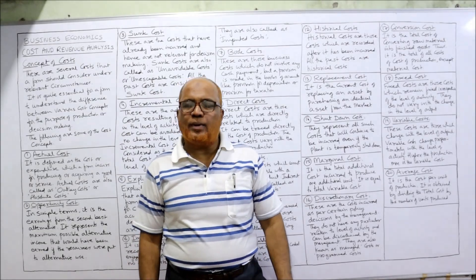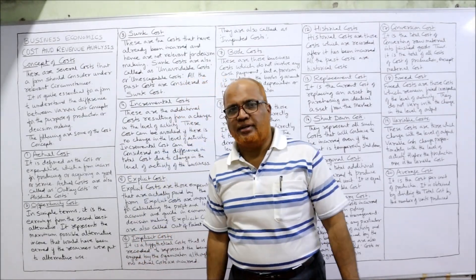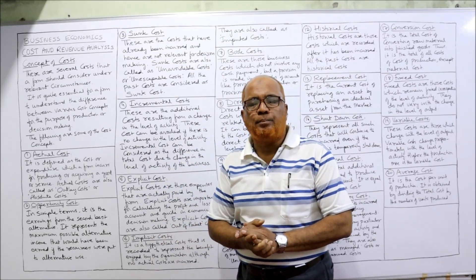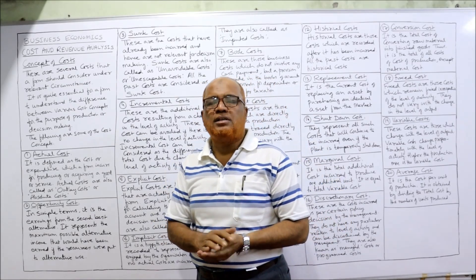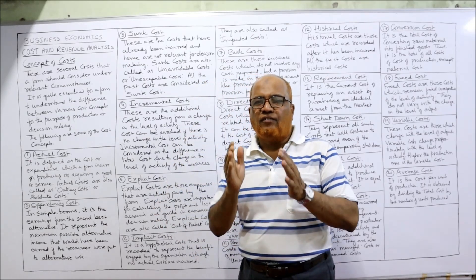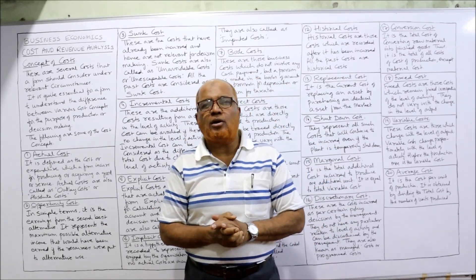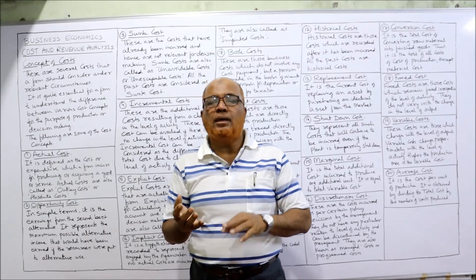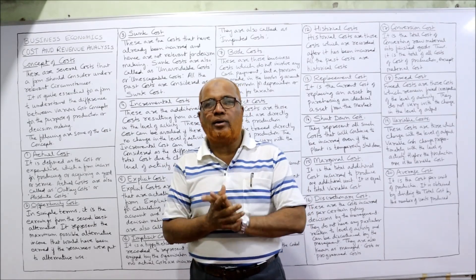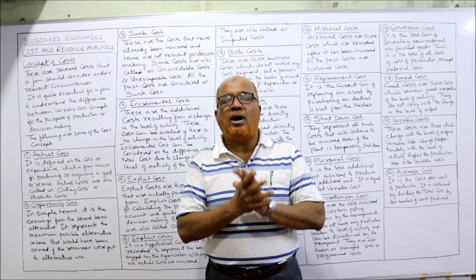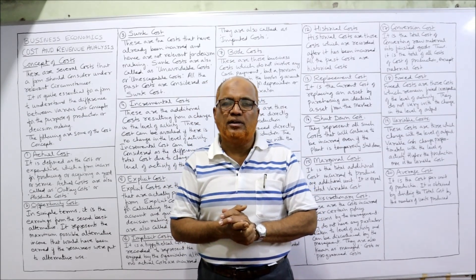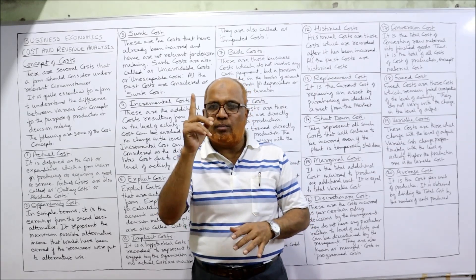Hello viewers, welcome to my channel. I am Hashem Ali Khan. So far I have completed four units in the subject of Business Economics. Now I am going to start unit number five. In the first unit of Business Economics I have given videos on the meaning of business economics, what is micro and macro economics, what is the law of diminishing marginal utility, and what is the law of equi-marginal utility.